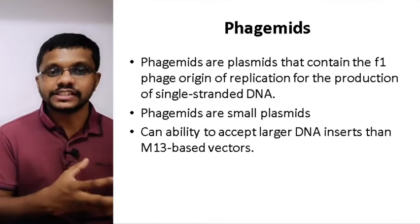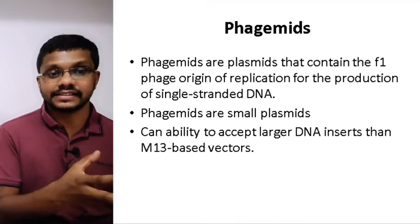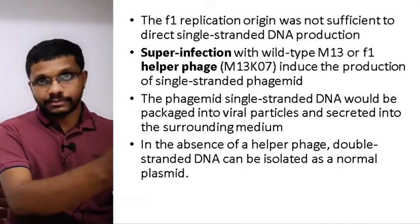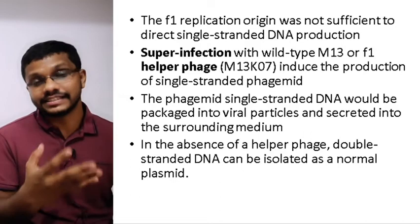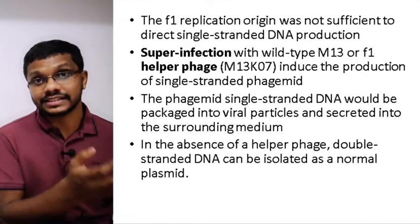Phagemids are plasmids that contain the F1 phage origin of replication, which can replicate double-stranded DNA into single-stranded DNA. Phagemids are small plasmids with the ability to accept larger DNA inserts than M13-based vectors. It is a plasmid with F1 origin of replication, but it does not have any genes essential for replication of the M13 phage. The only region the phagemid has from the M13 vector is the F1 origin of replication.